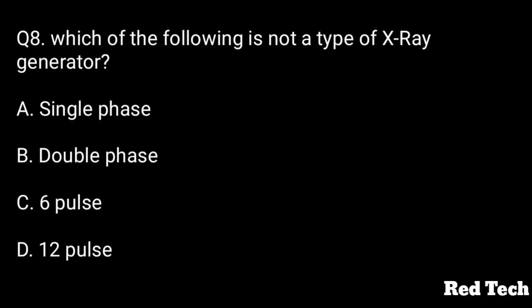Question number eight: which of the following is not a type of X-ray generator? Option A is single phase, option B is double phase, option C is six pulse, option D is 12 pulse.